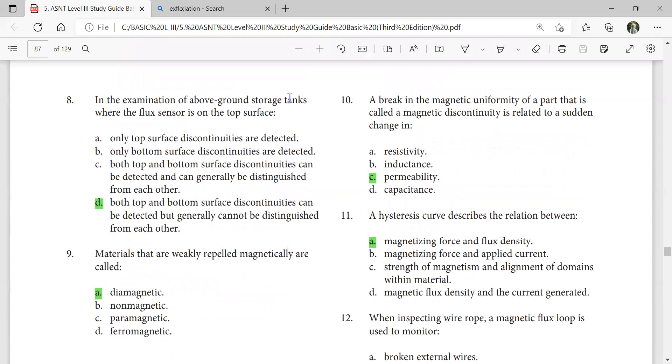In the examination of above-ground storage tanks where the flux sensor is on the top surface, both top and bottom surface discontinuities can be detected but generally cannot be distinguished from each other.